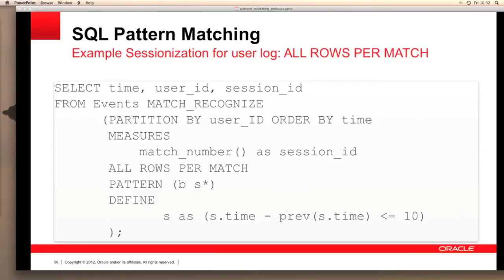We've bucketed the data by user ID using the partition by clause, and then sorted the data by time. Our pattern requires us to match one or more instances of event S, as shown in the pattern clause, where S is the current time minus the previous time and must be less than or equal to 10, as shown in the define clause. Our output table defined by the measures clause contains the session ID, calculated using the built-in feature match number. Note that in the select clause, we can still refer to columns in the table events, such as time and user ID event, even though these columns are not included in the measures clause.